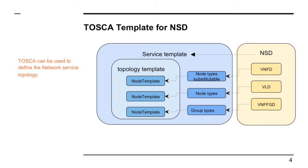The other component is VNF forwarding graph descriptors. With multiple VNFs forming the network service, you must describe the packet flows to follow in the forwarding graph. Zooming into the VNF forwarding graph, it has a topology template where you define virtual deployment units — examples like a firewall or other network functions where each is deployed in a container or VM. Between VDUs there must be connection points linked to your OpenStack networks, which are referred to by virtual links.